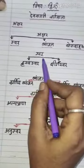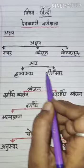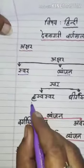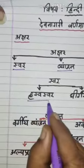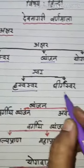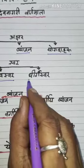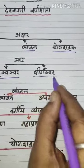Swar — there are two types. One is Risvaswar. The second one is Dhirgaswar.